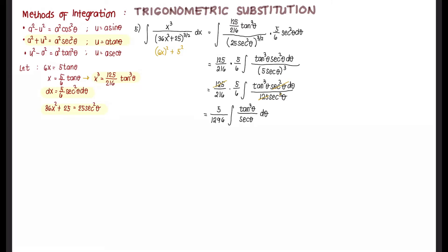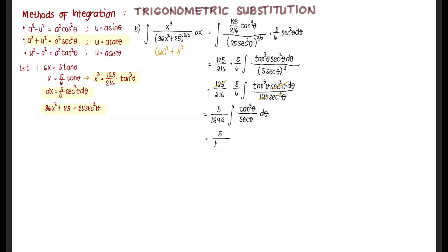Now we have a trigonometric integral. There are cases where we can use tangent and secant directly, or change them in terms of cosine. We rewrite sec θ in the denominator as sec⁻¹ θ, giving (5/1296) ∫ tan³ θ · sec⁻¹ θ dθ. Since tangent has an odd exponent, we factor out sec θ · tan θ.